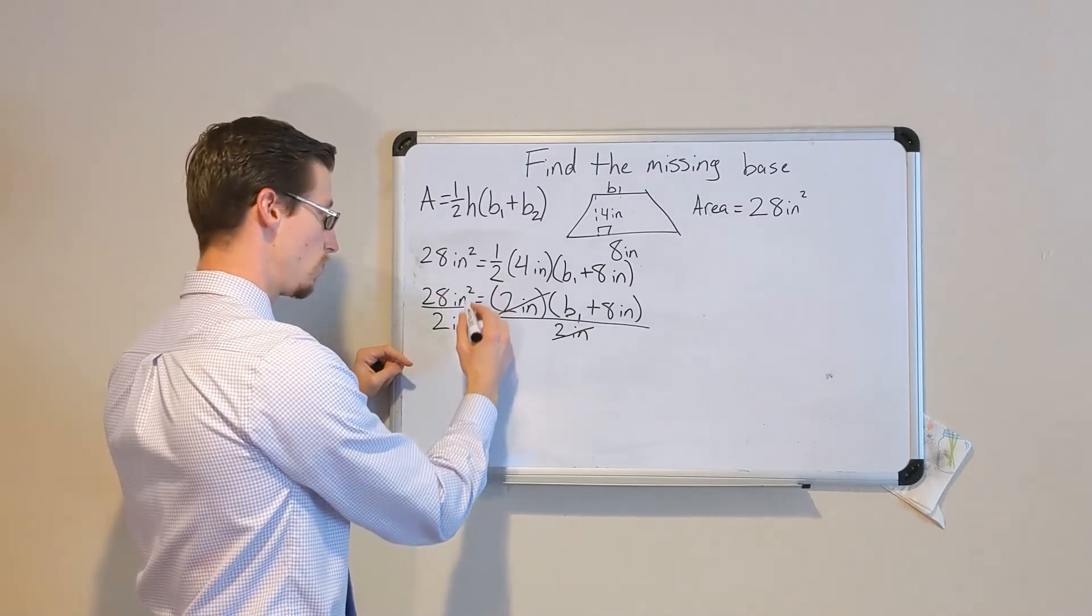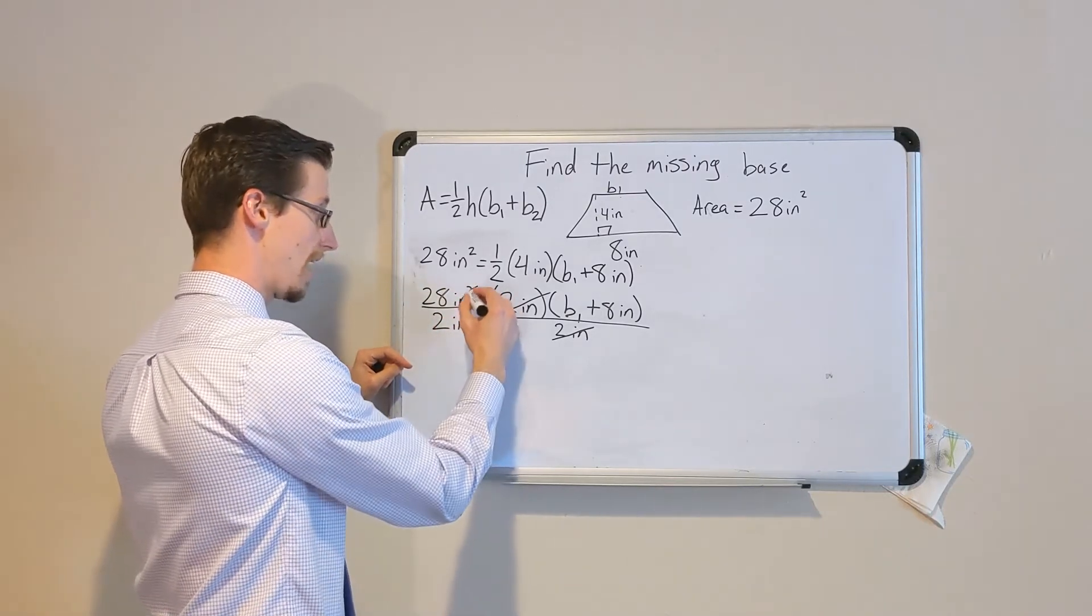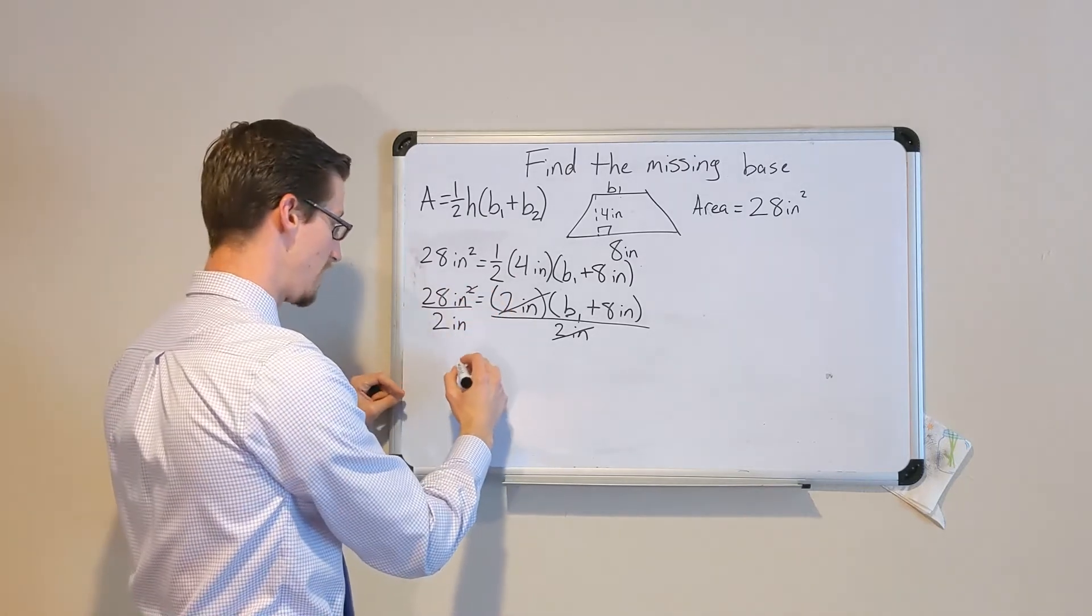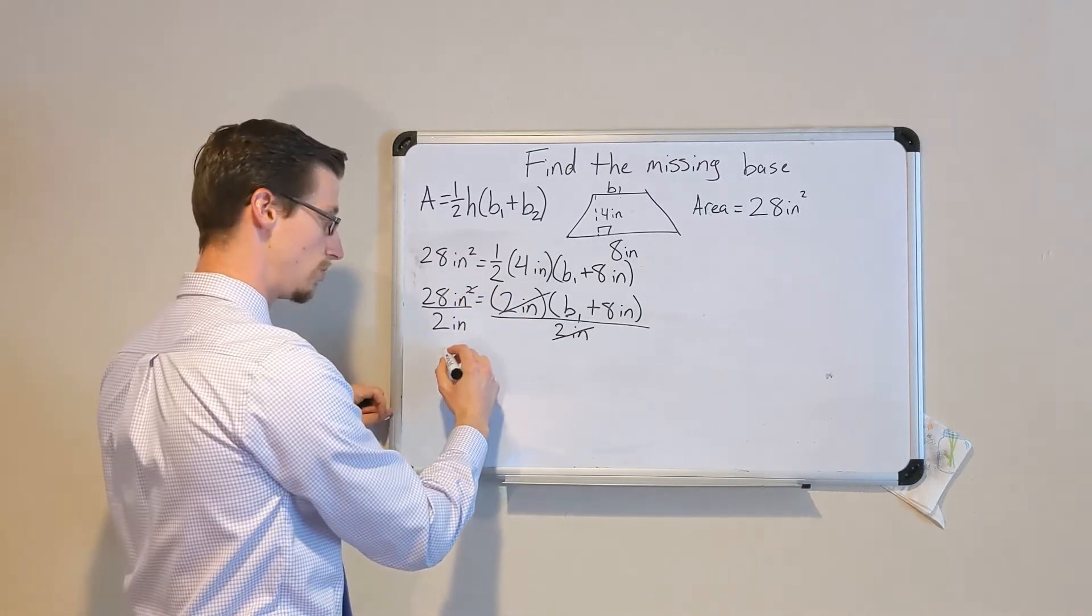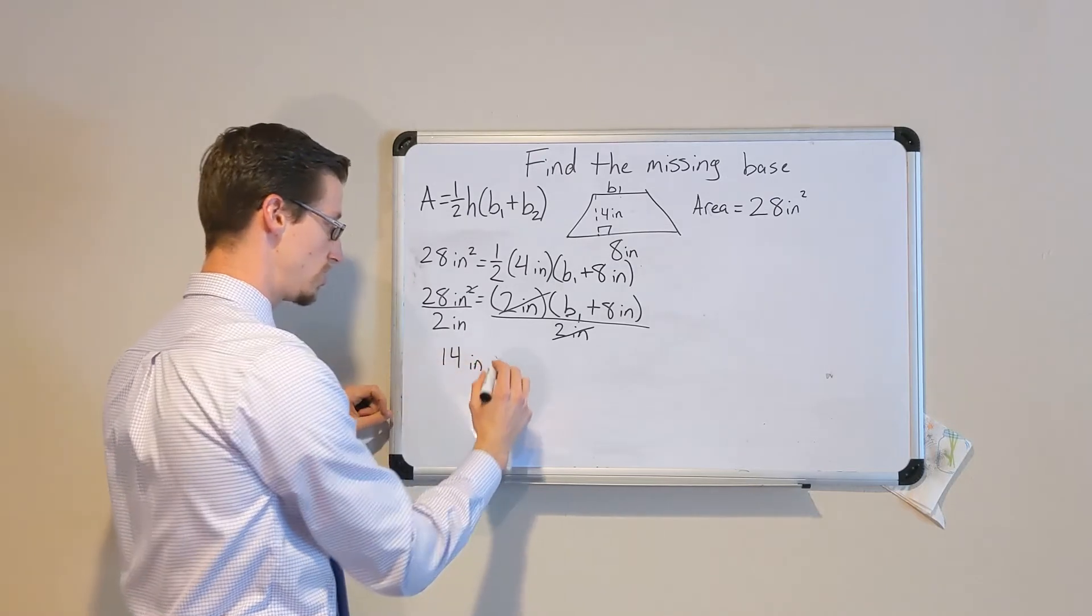The inches squared will cancel out that exponent of 2. So we'll only have inches at that point. And 28 divided by 2 is 14. So 14 inches.